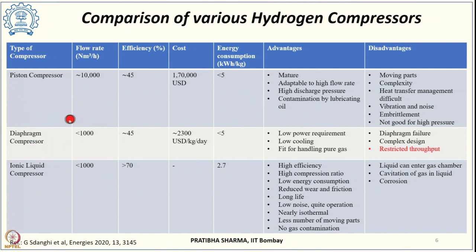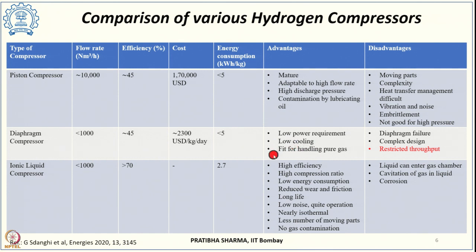Diaphragm compressors achieve comparatively lower flow rates than piston compressors — less than 1000 normal meter cube per hour — with efficiency of 45 percent and cost of 2300 USD per kg per day. They have lower power and cooling requirements, are fit to handle pure gases as the diaphragm separates the piston chamber from the gas handling chamber. Disadvantages include stresses on the diaphragm leading to possible diaphragm failure, complex design, and restricted throughput.